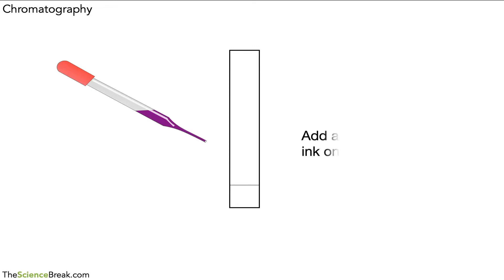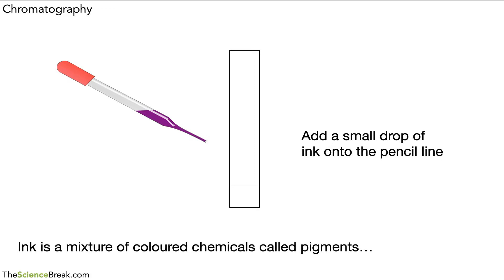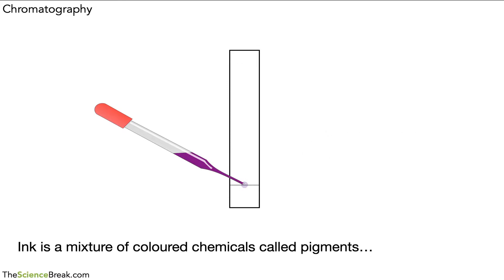Here we have an example of some ink. As we said, the ink is a mixture of colored chemicals called pigments. We can put a small drop on the pencil line, then give it a moment to dry. We can add another spot on top just to make that a little bit darker, so we get a better separation of colors or we can see the colors better. We might do that a few times just to get a nice dark spot that we can do our chromatography with.